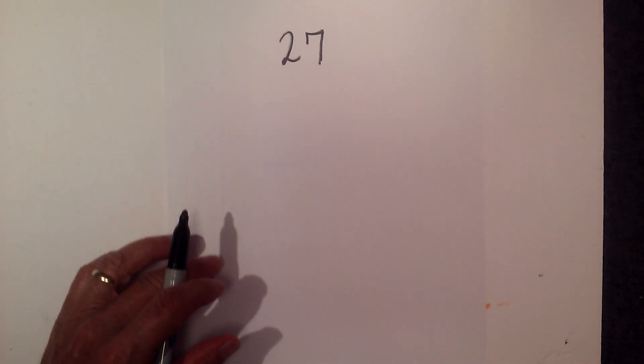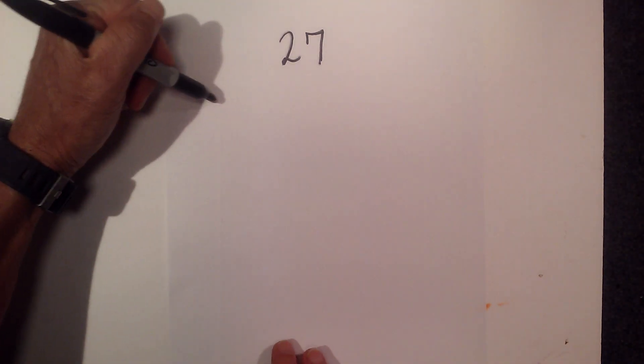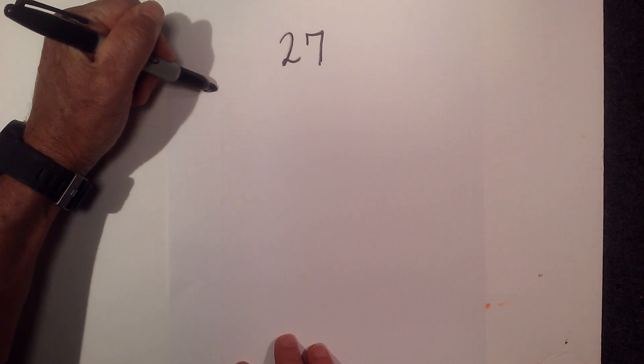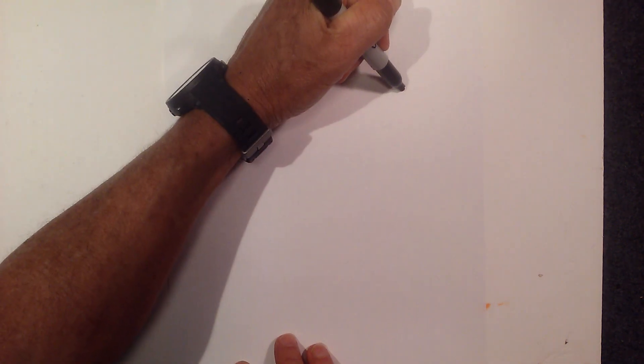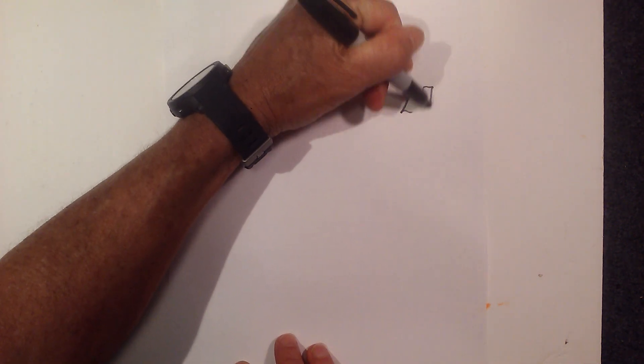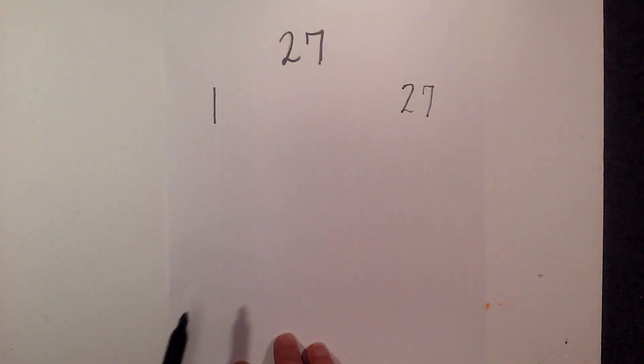In this video let's go over the factors of 27 and here's how I like to find the factors. I'm going to write 1 and then 27, and then find all the numbers in between that multiply together to equal 27.